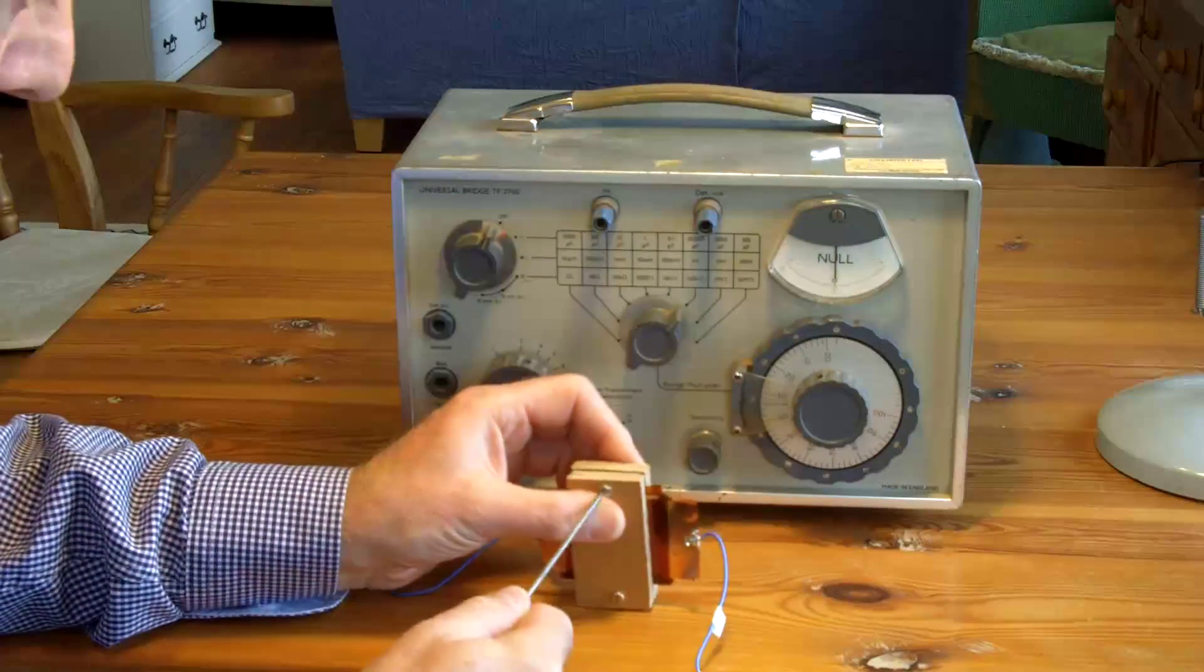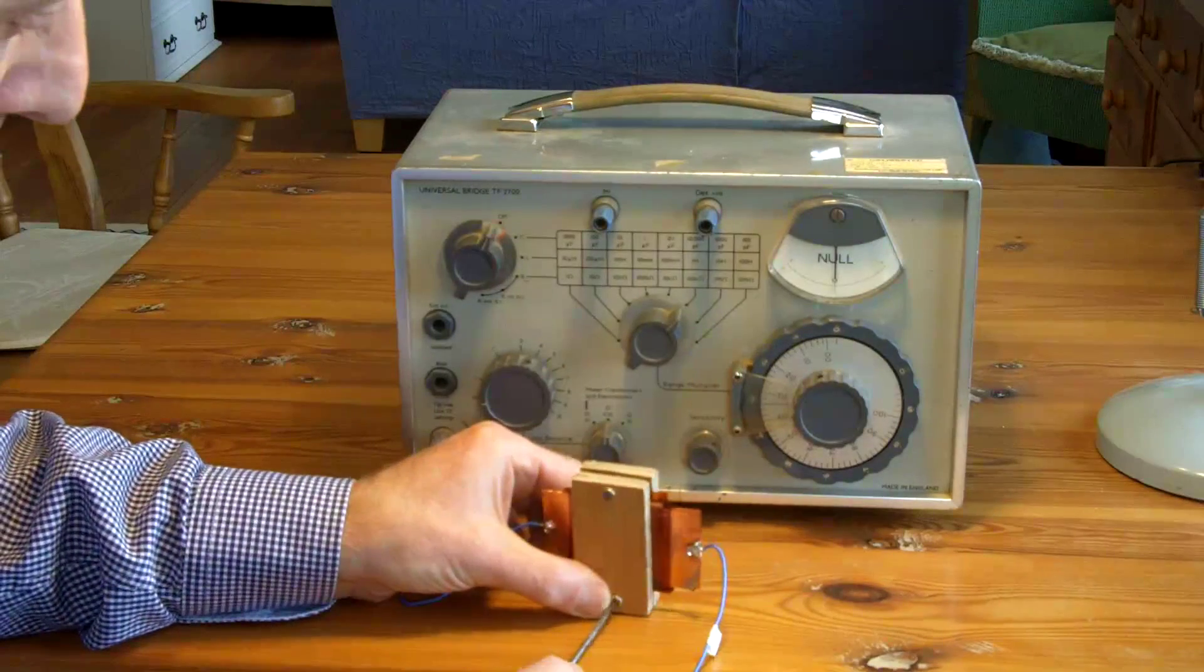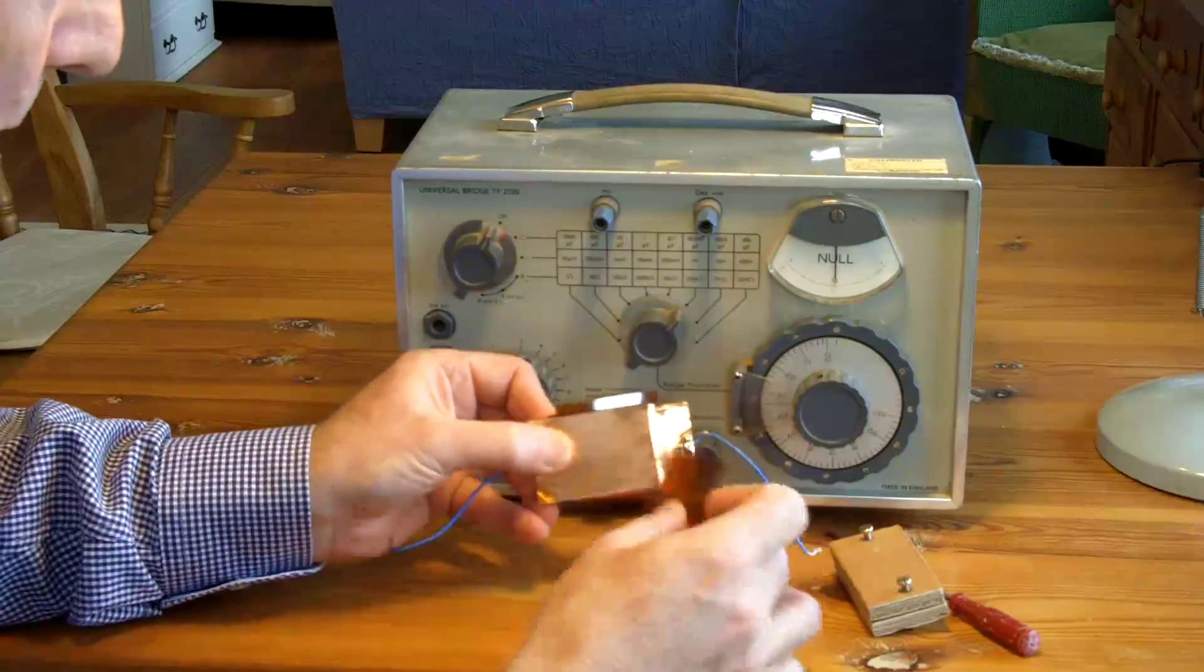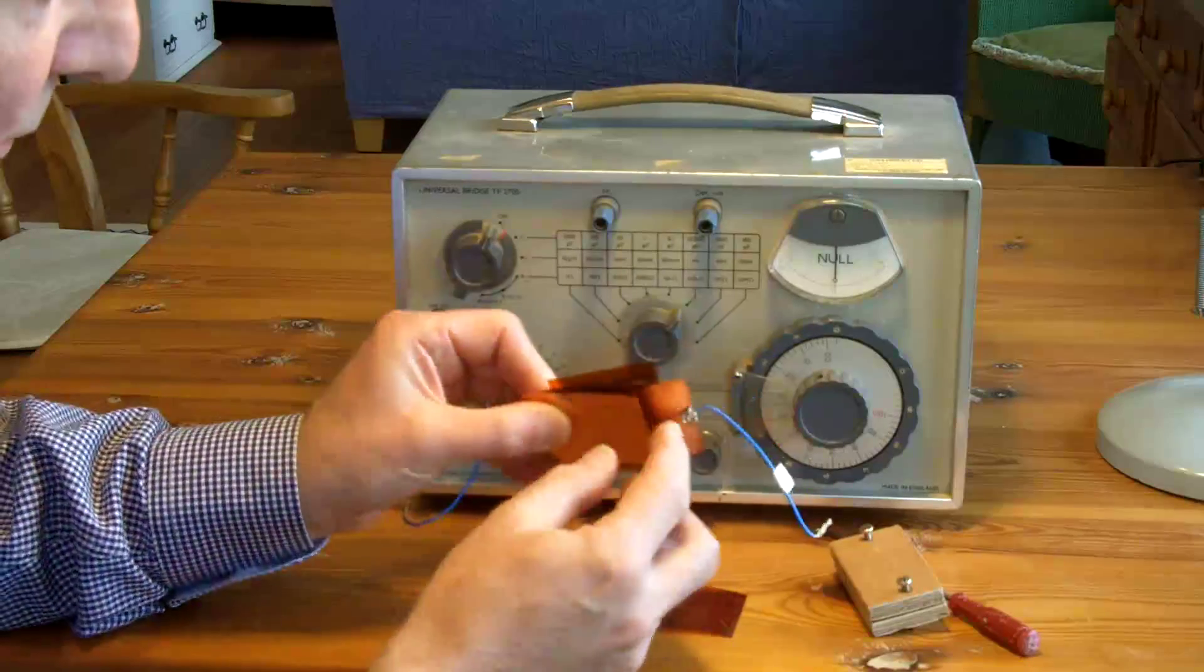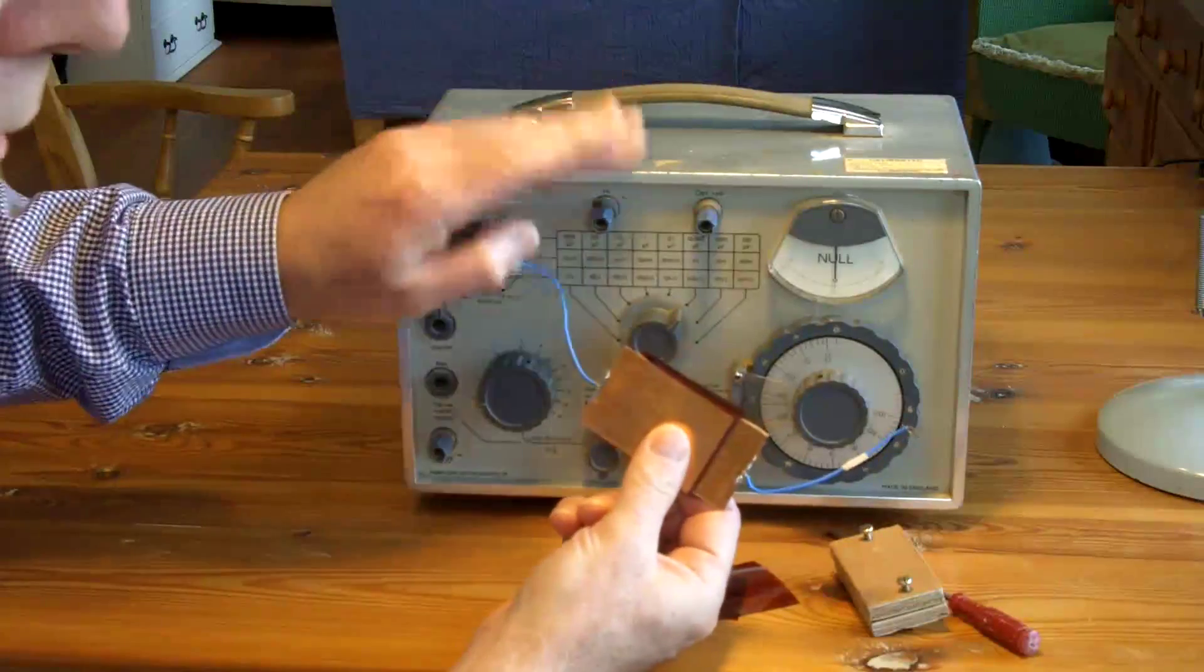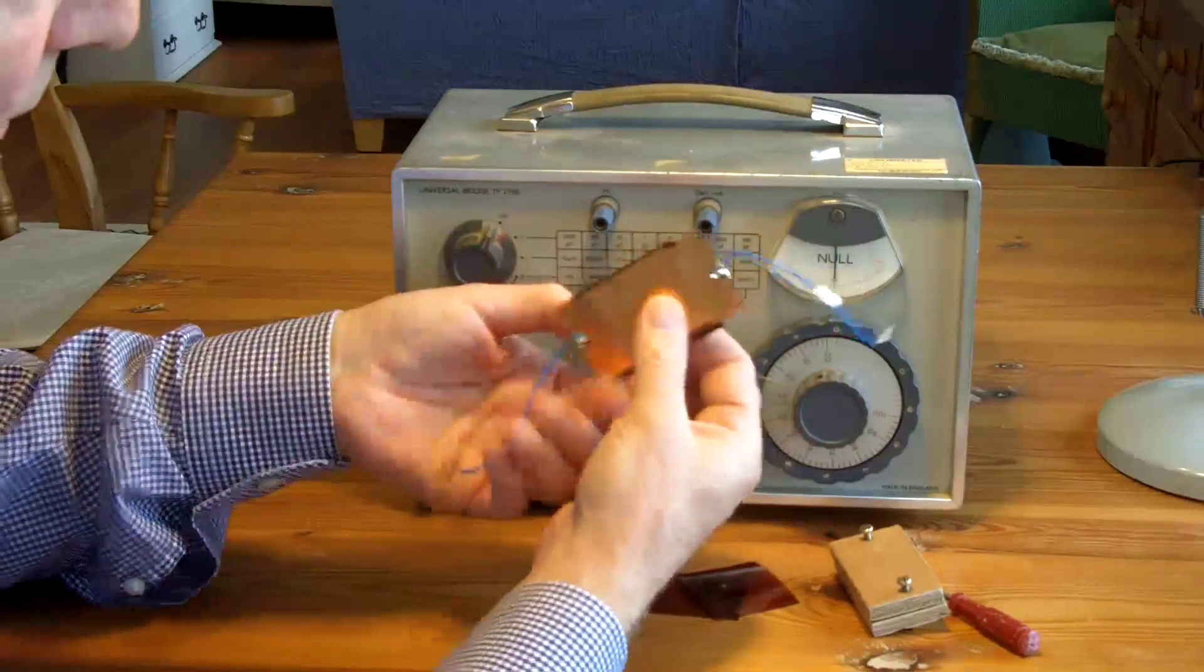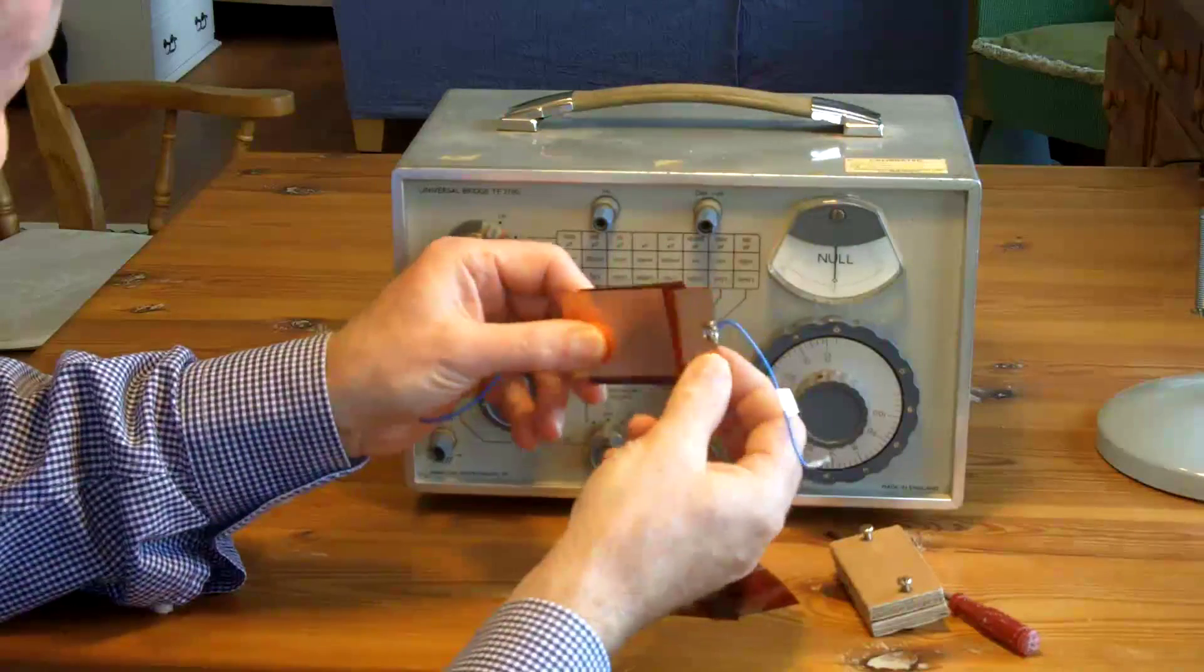And if we open this up, we'll see that this first layer was acting as the screen. And on both sides, it's like having, if this is the earthy side of the equipment, we've got the earthy side of the capacitor screening the inner side. And that's helpful.